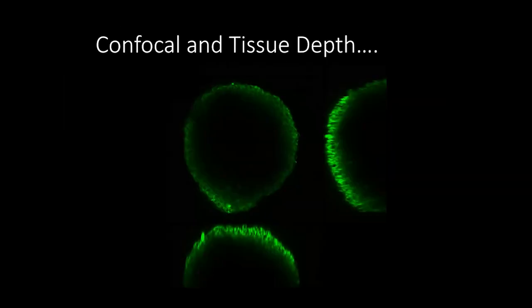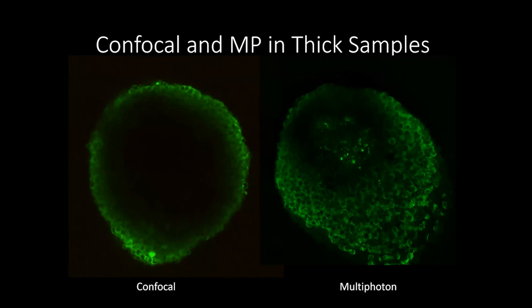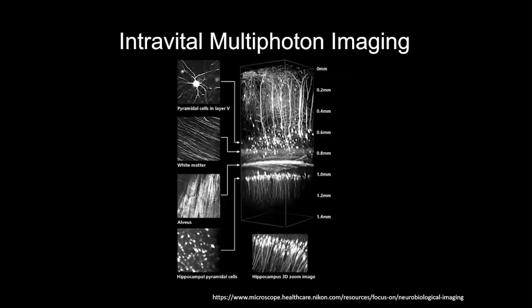Comparing the same sample with confocal versus multi-photon, you can see much better excitation all the way through with 2P. At 100 microns into the sample, confocal shows absolutely nothing in the middle, but multi-photon reveals all the cells and what appears to be necrosis. And this image was taken from an actual living mouse — you can put the objective up to a millimeter and a half into the mouse brain using multi-photon microscopy.